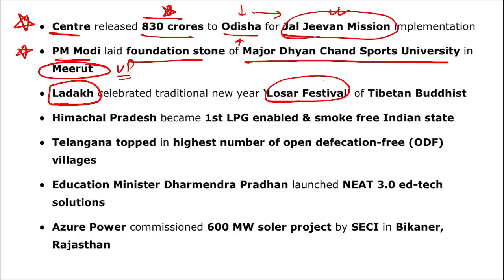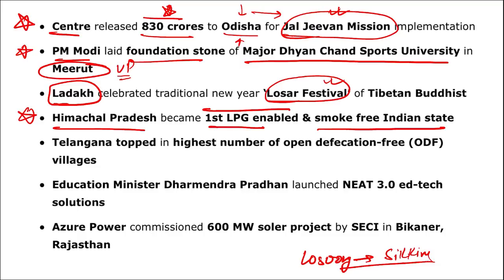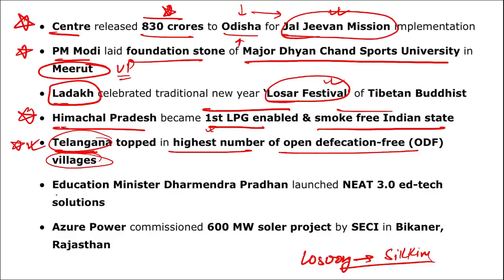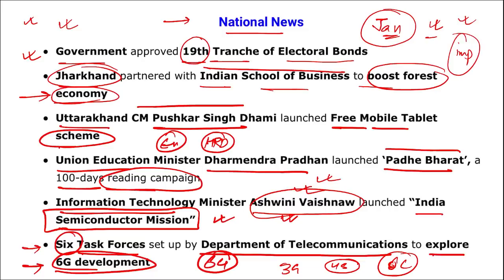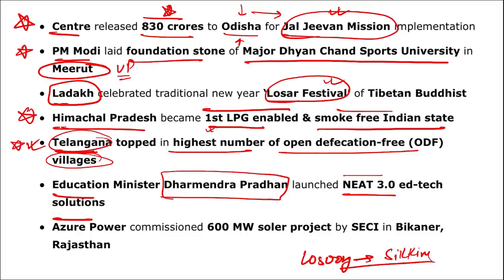Losong Festival is associated with Himachal Pradesh. Himachal Pradesh became the first LPG-enabled and smoke-free Indian state. Telangana topped in the highest number of open defecation-free villages. Education Minister Dharmendra Pradhan also launched NEAT 3.0 ad-tech solution. Azure Power commissioned a 600 megawatt solar project by SECI in Bikaner, Rajasthan.